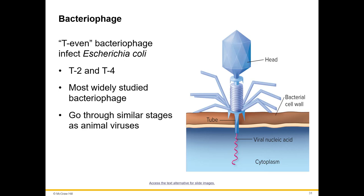The bacteriophage stays on the outside of the bacterial cell and injects its genetic material in, which then directs the bacterium to produce more viral particles — very similar to what happens in animal cells. Bacteriophages are important partly because they can make bacteria more pathogenic, and research is ongoing to understand this better.